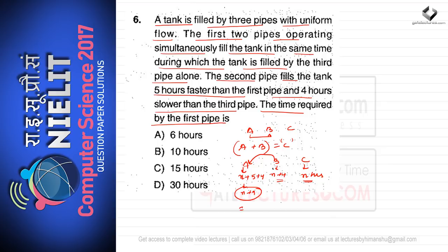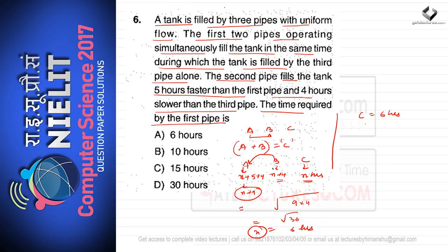Using a shortcut: multiply the extra hours taken by A and B — that is 9 and 4 — to get 36, then take the square root to get 6 hours. So x equals 6. C takes 6 hours, B takes 10 hours, and A takes 15 hours. The time required by the first pipe is 15 hours, so option C is correct.